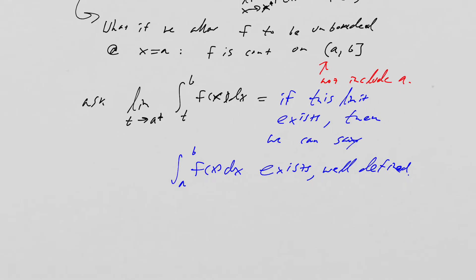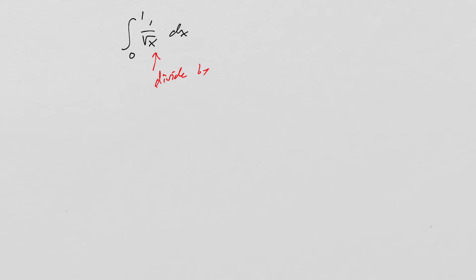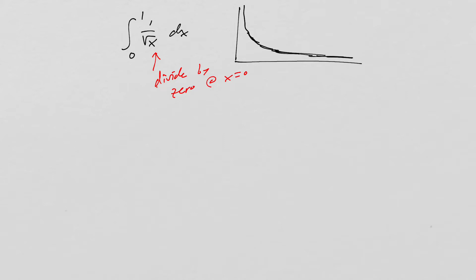Let me give you a classic example: the integral of 1 over square root of x dx from 0 to 1. This function clearly has a divide-by-zero at x equals 0. Looking at the graph, it has that inverse-type behavior with a vertical asymptote at x equals 0. When setting up this integral, we actually set up an integral that goes from t to 1 of 1 over root x dx.